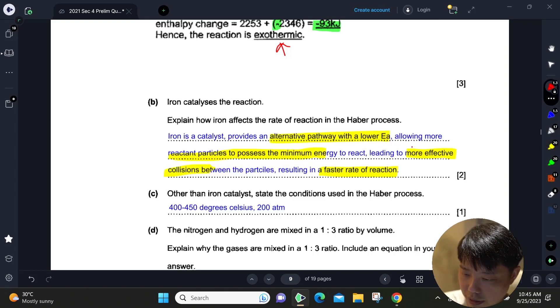In fact, these last two lines - more effective collisions and faster rate of reaction - are fairly common. We can use it for catalysts, for temperature, etc.